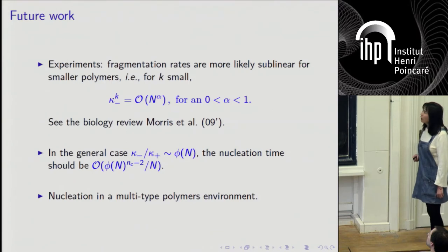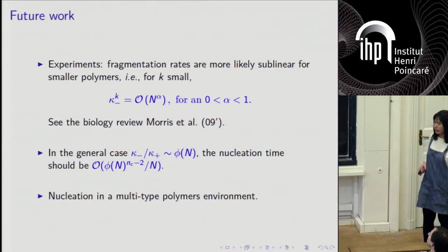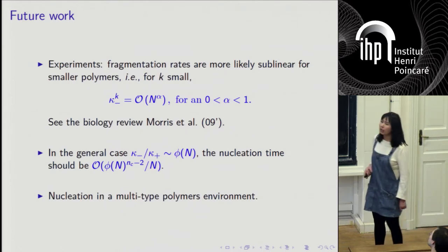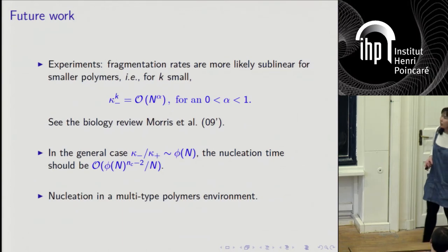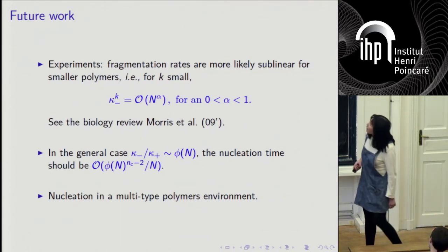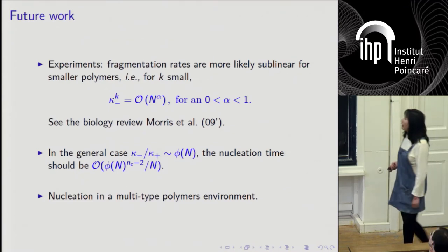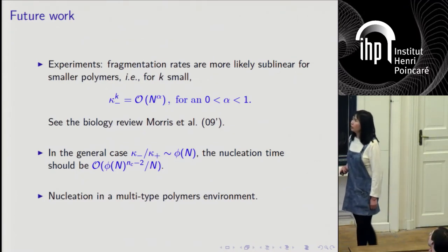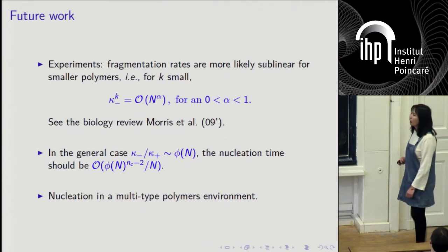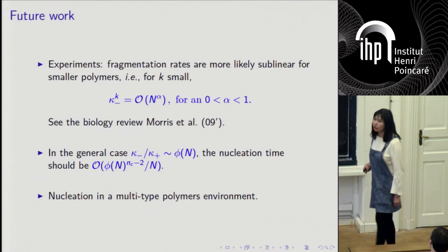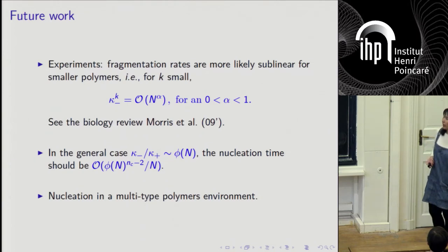Our future work: In this work we are assuming that the fragmentation rate is linear with respect to N, but experiments show in some cases this fragmentation rate is more likely to be N to the one third, which is sublinear. We are working on the general case. We believe that the correct time scale would be N^{n_c - 2/α}. The proofs are quite similar to the linear case. We are going to do the multi-type case. Also we have a collaboration with a biologist at Kent University. We are going to apply our result to their design of experiments.